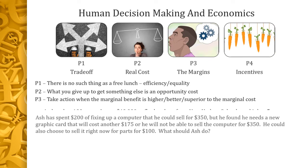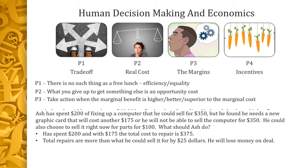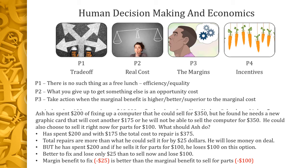Here's another question — take a moment to read it. At first you might say sell the computer for $100, since he's already spent $200, and putting in another $175 to fix it would bring the total cost to $375. But look again: he's already spent $200 and that money is gone. If he sells for parts at $100, he loses $100 on this option. It's much better to fix the computer and lose only $25 than to lose $100. So the marginal benefit to fix is negative $25, which is much better than the marginal benefit to sell at negative $100.